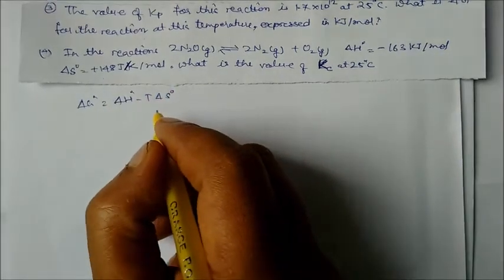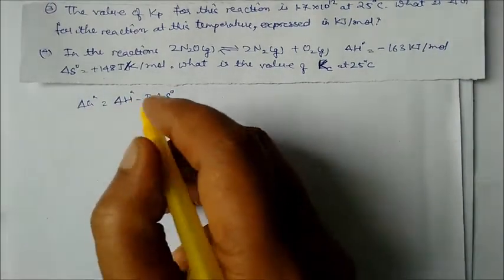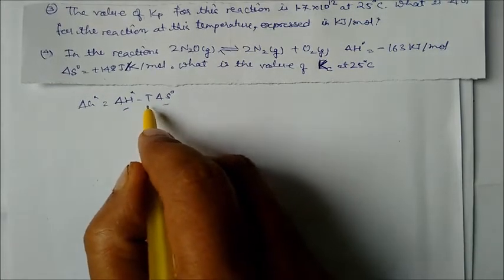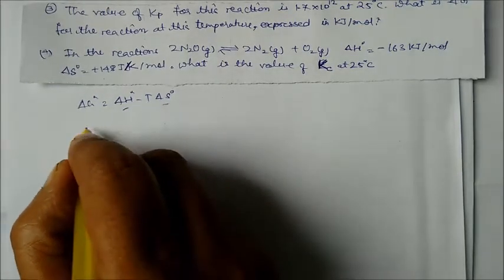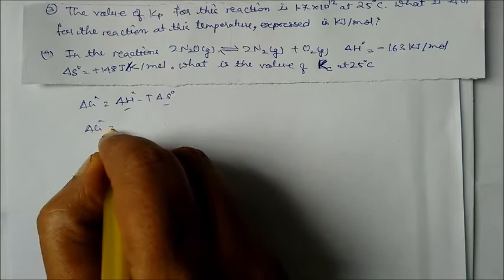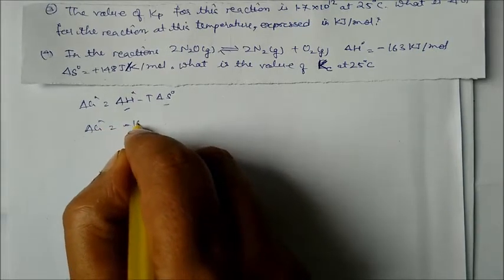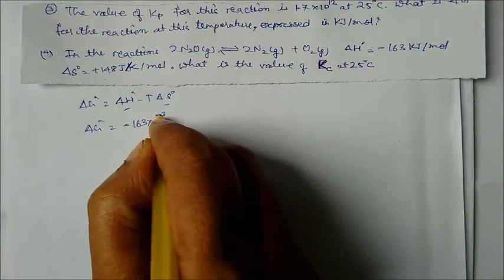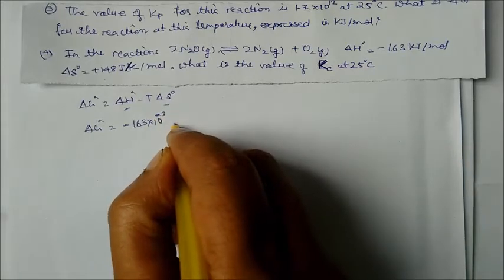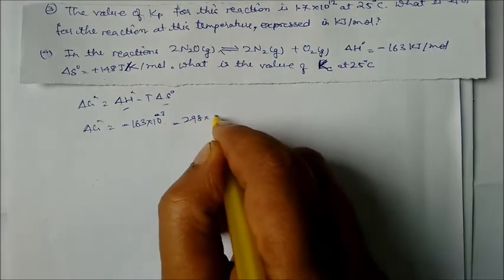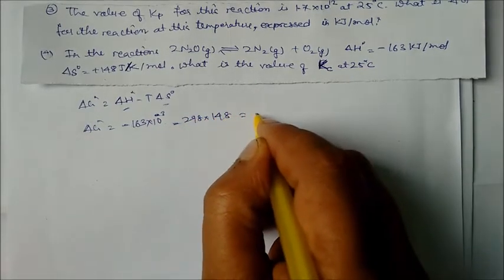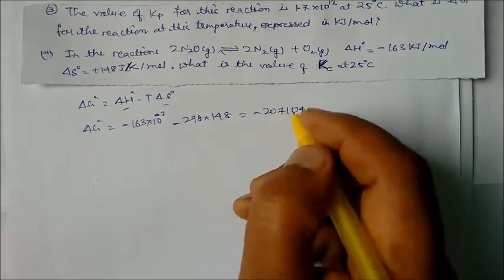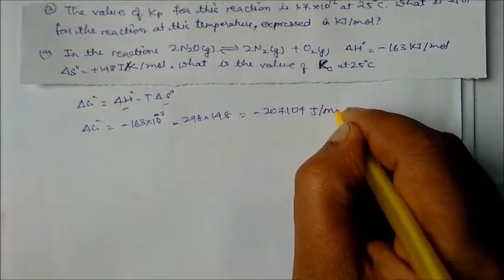This is the relationship between ΔG, ΔH, and ΔS. Substituting: ΔG° = −163 × 10³ − 298 × 148 = −207104 J/mol. This is our answer.